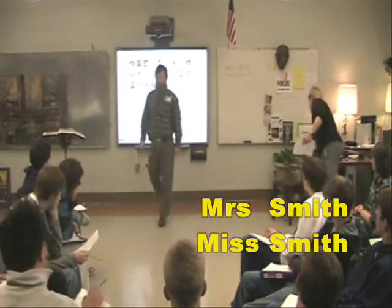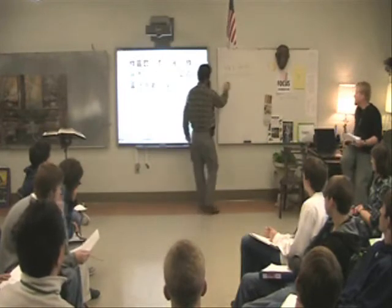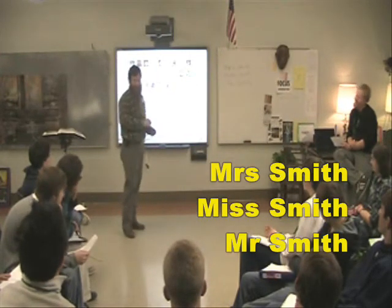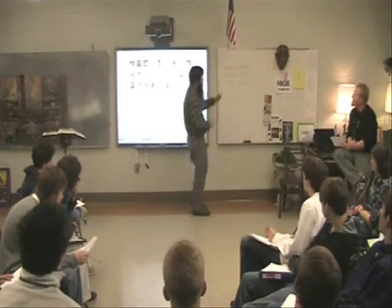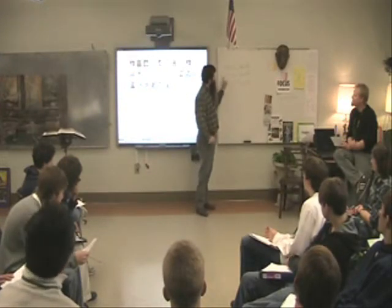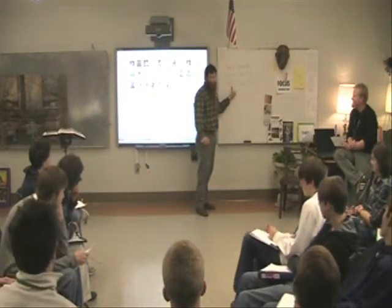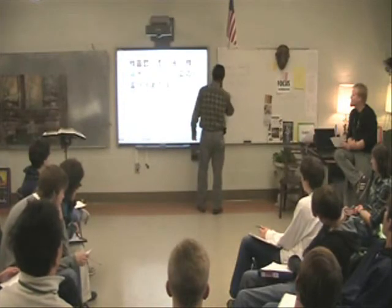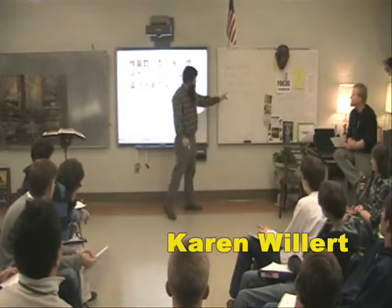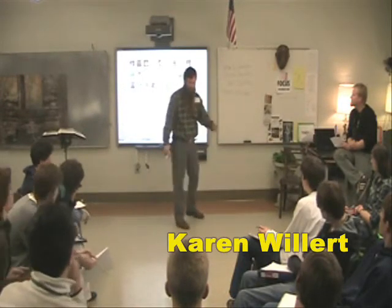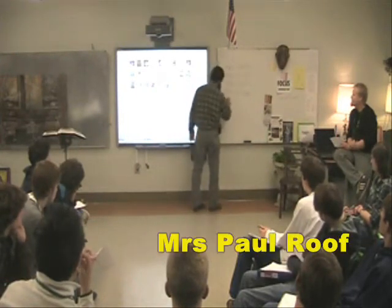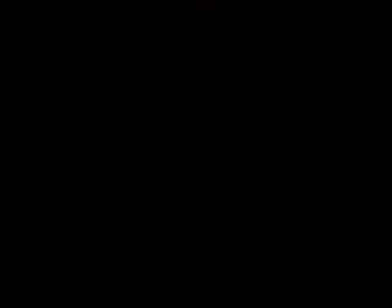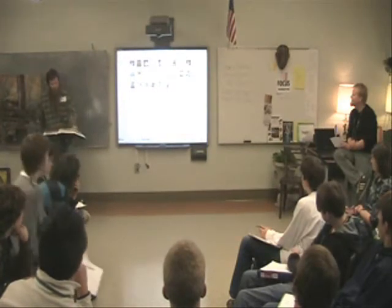What do you know about these two Smiths? He's a man — is he married? We don't know. The person in power can hide their status. Here's my wife's maiden name: Karen Willard. When Karen and I got married, she is no longer Karen Willard but Mrs. Paul Roof. Her whole name is gone — it's a loss of identity.